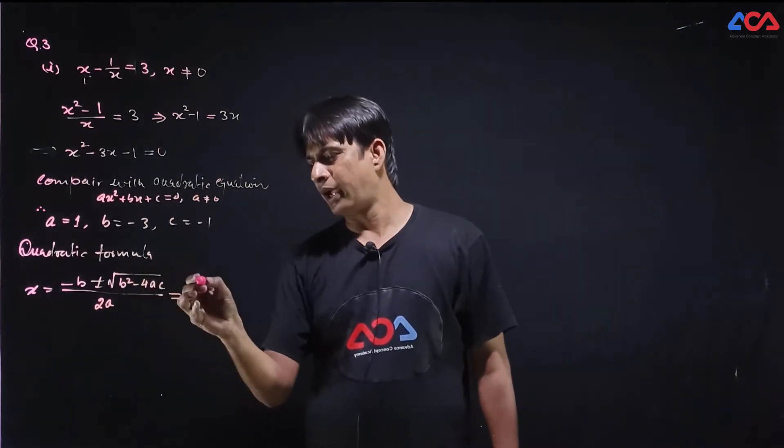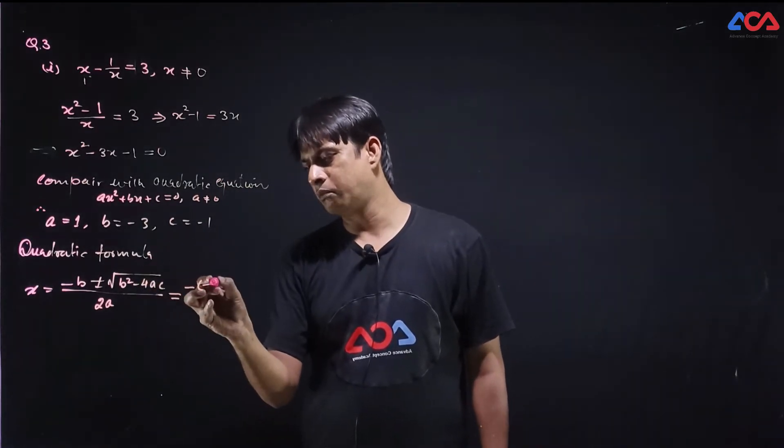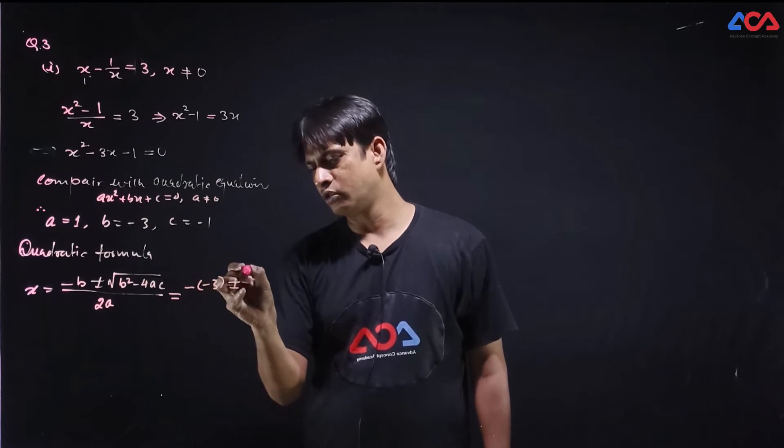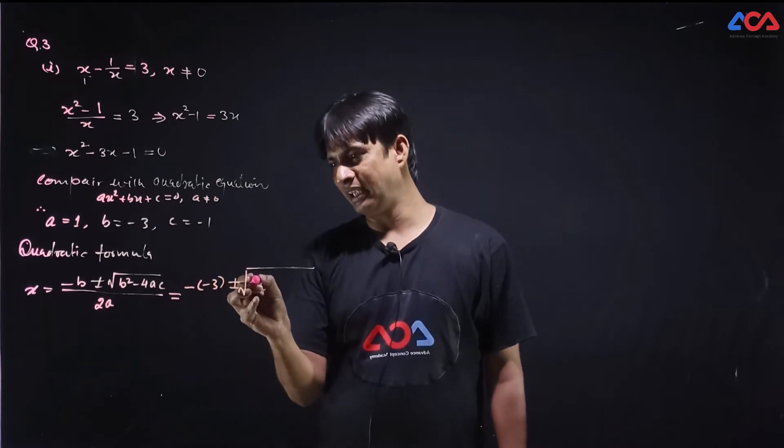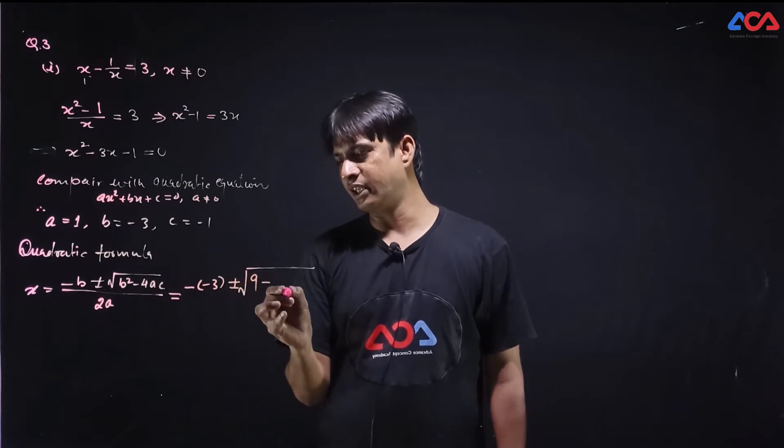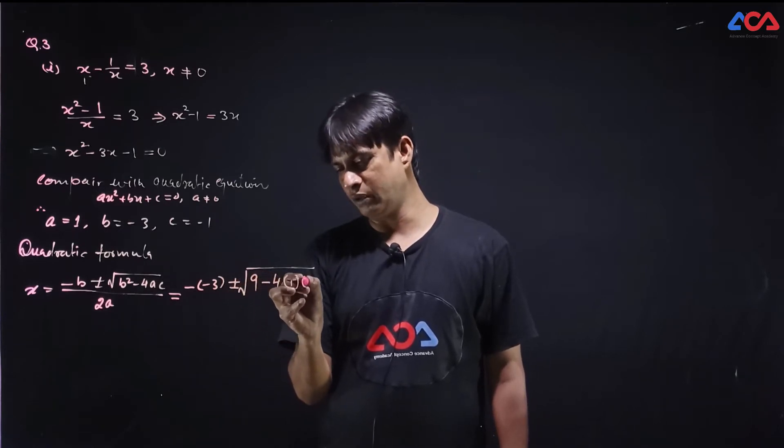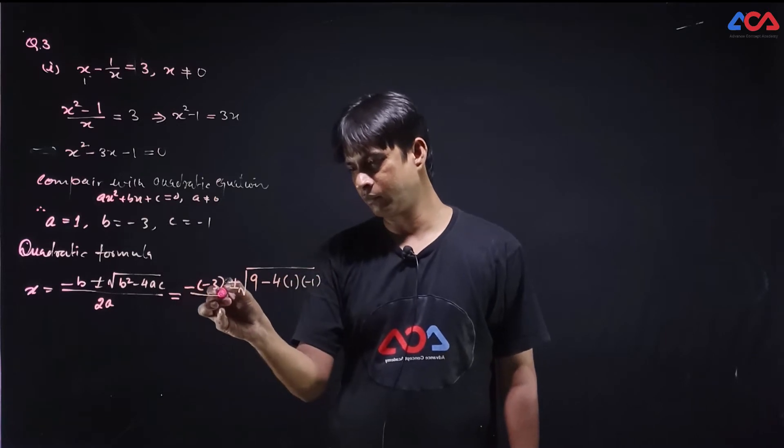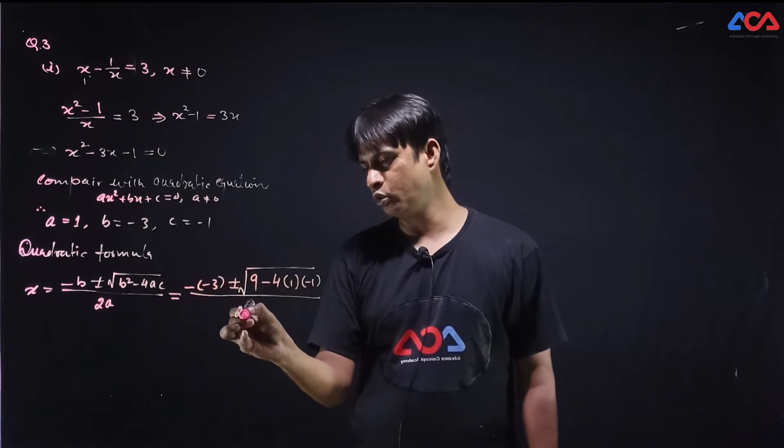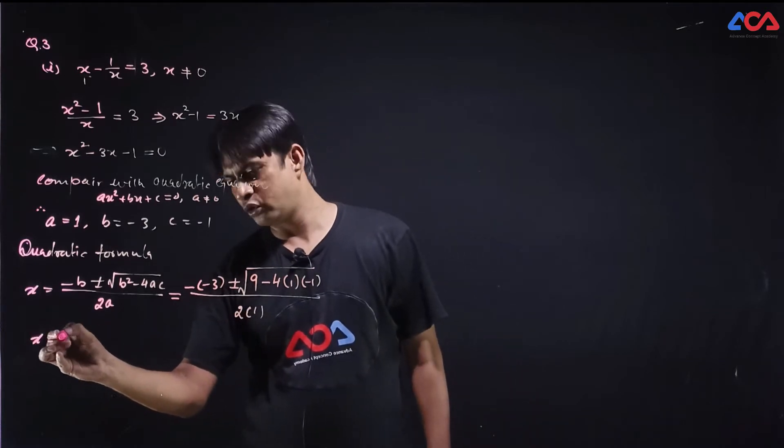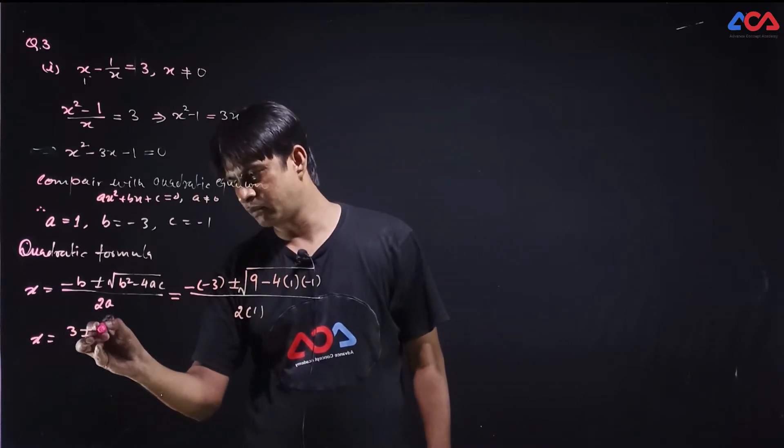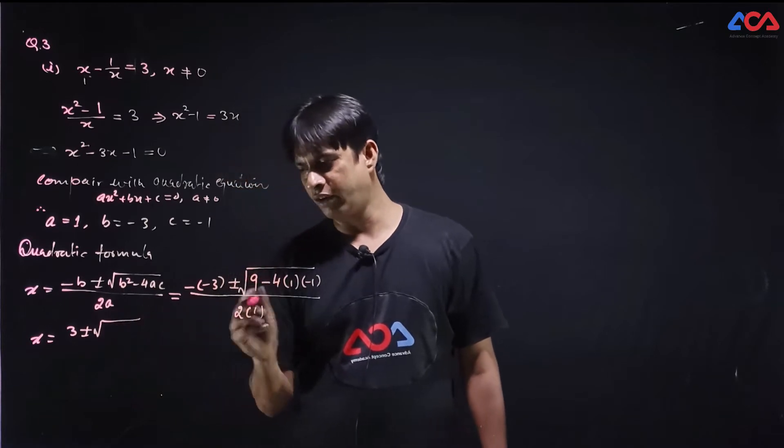b value is minus 3. Minus 3 plus minus root b square means 9. Minus 4. A value is 1. C value is minus 1. Therefore 2 into 1. Then x is equal to 3 plus minus, so simplify it.